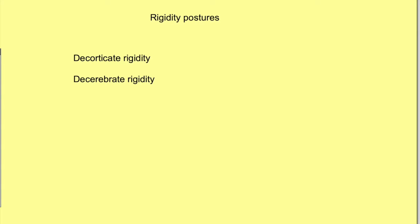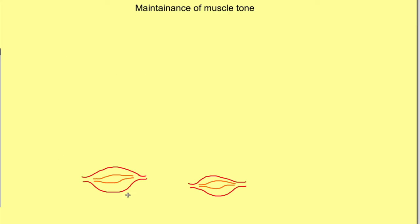Broadly, there are two types of rigidity postures: decorticate rigidity posture and decerebrate rigidity posture. Let's try to understand the mechanism of how they occur. For that, we need to understand muscle tone and the various tracts which influence muscle tone.